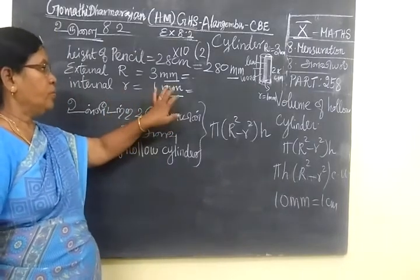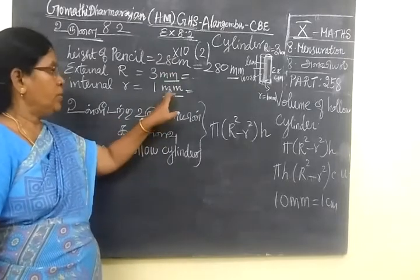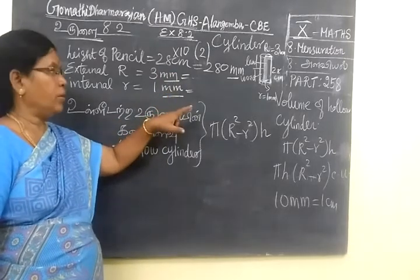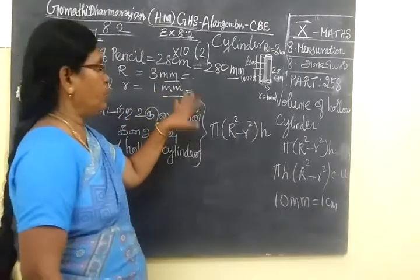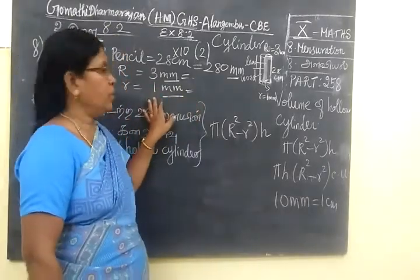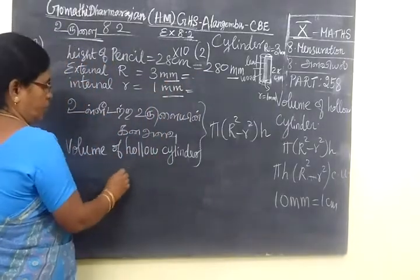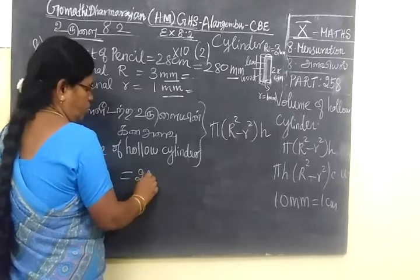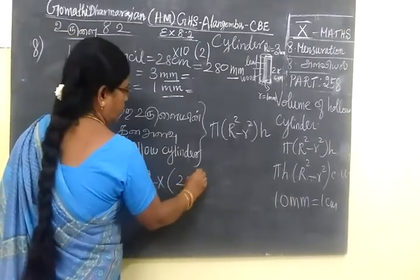Now we can find the volume. So 22/7 × h, h is 280. Sorry, this is height here. So h is not 3. So R² minus r², that is larger radius squared minus smaller radius squared, into h.